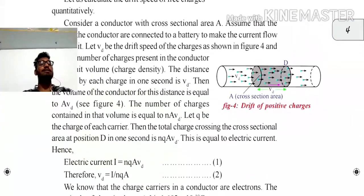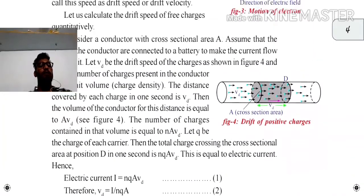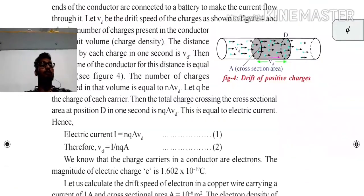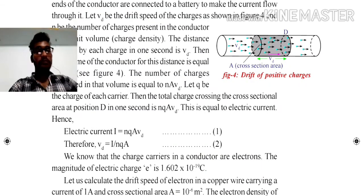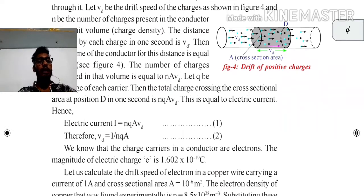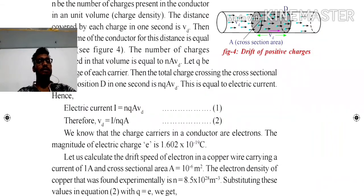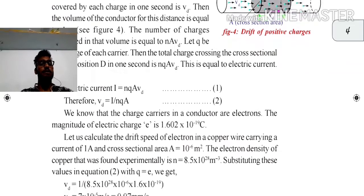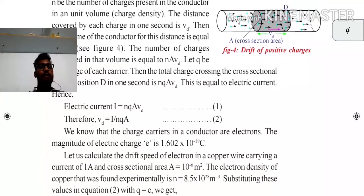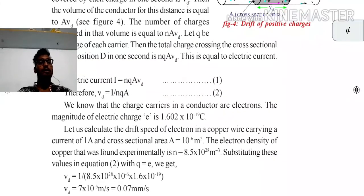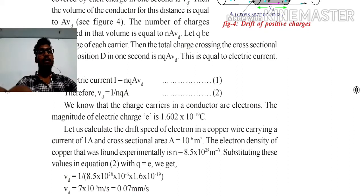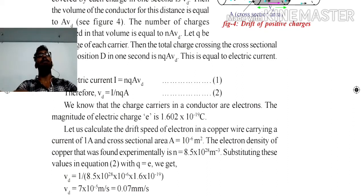Let Q be the charge of each carrier. Then the total charge crossing the cross-sectional area in one second is equal to N × Q × A × VD. That is equation 2. For electrons, Q equals the electron charge, which has a fixed value of 1.6 × 10⁻¹⁹ coulombs.